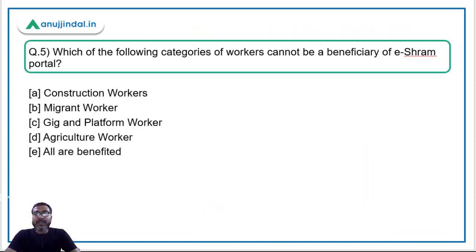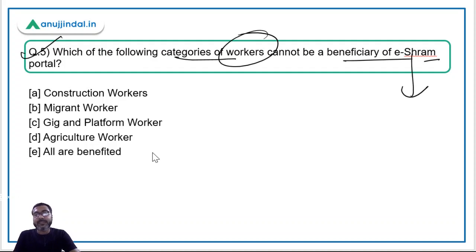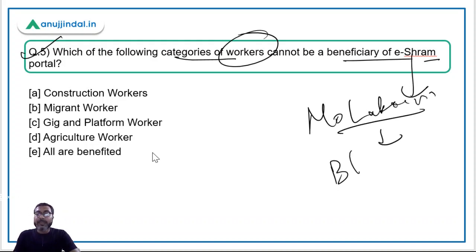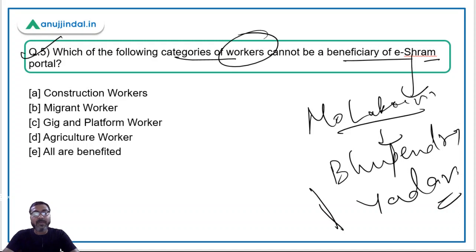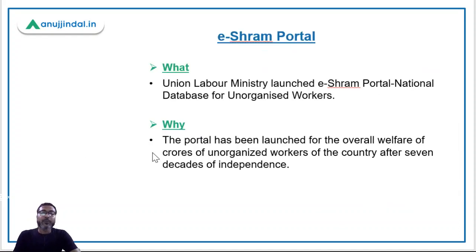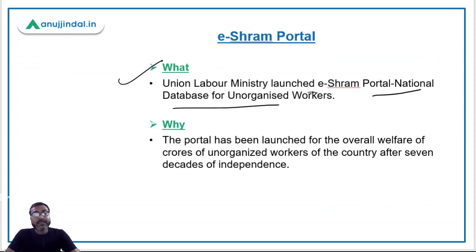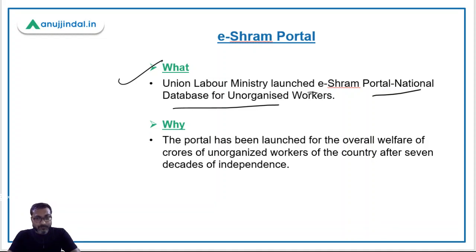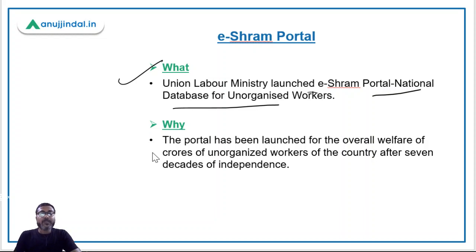Question five: which categories of workers cannot be a beneficiary of the eShram portal, recently launched by the Ministry of Labour and Employment? The minister is Mr. Bhupender Yadav, the new minister after the cabinet reshuffling, who also holds the Environment, Forest and Climate Change portfolio. The union labour ministry has launched the eShram portal — a national database for unorganized workers.